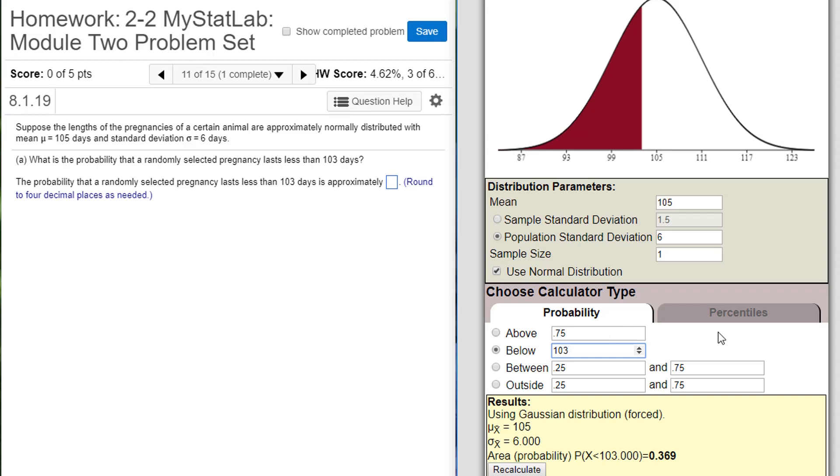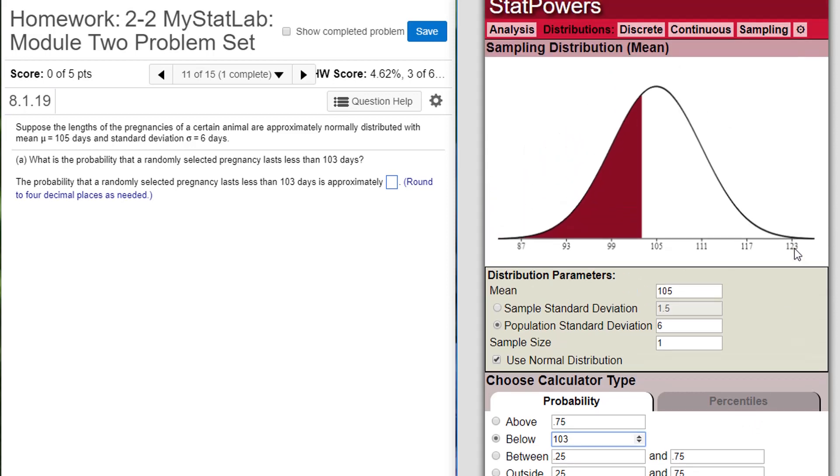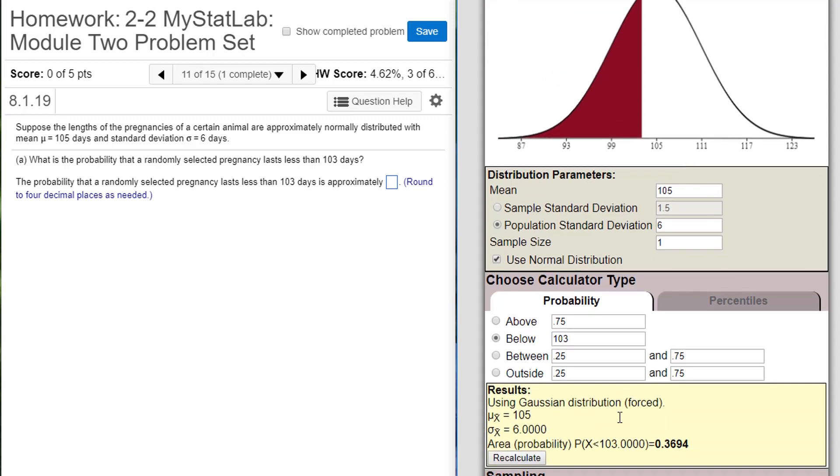Type it in, hit enter, and I'm asked to round to four decimal places so actually I'm going to go up to my settings, change precision to four decimal places and go back down. The probability that this calculates for me is 0.3694.